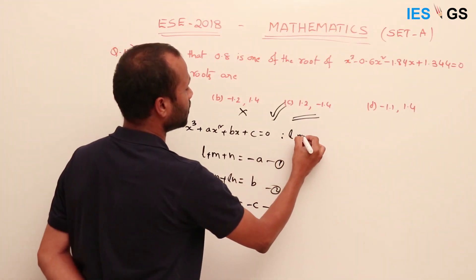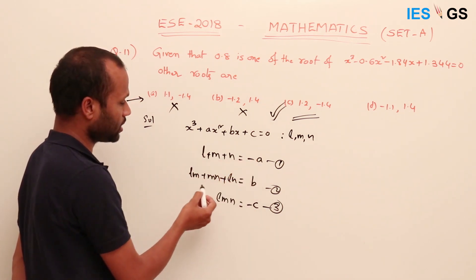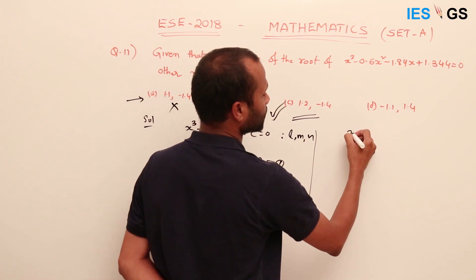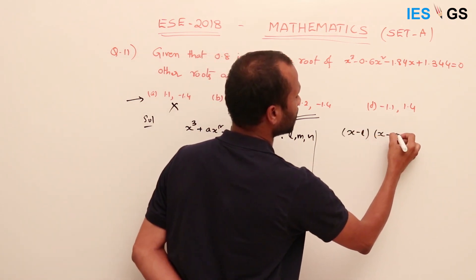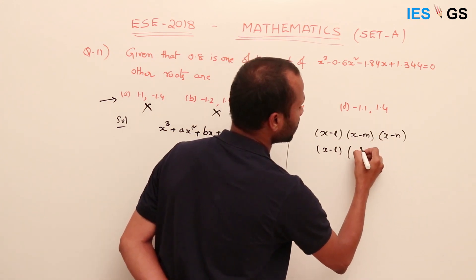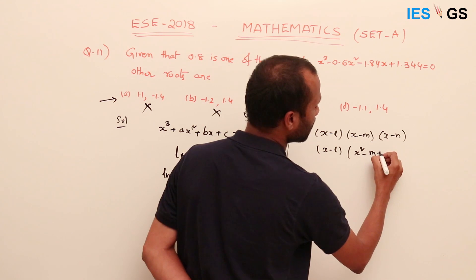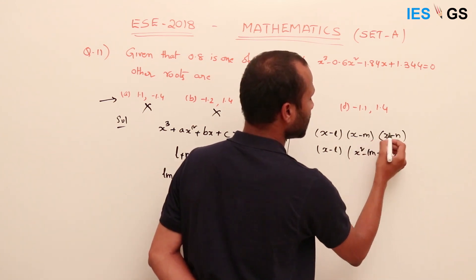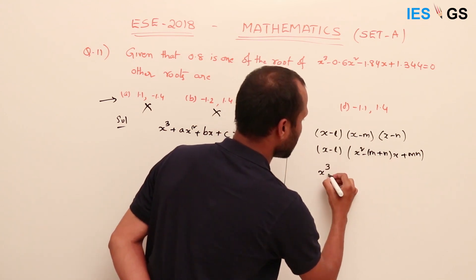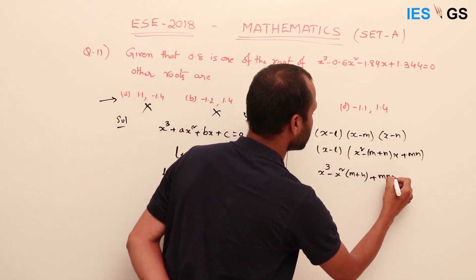Here we used the result that if l, m, n are roots of a third-order equation x³ plus ax² plus bx plus c equals 0, then l plus m plus n equals minus a, the sum of products equals b, and the product equals minus c. This comes from expanding x minus l times x minus m times x minus n, collecting the x² term as minus of m plus n, giving x² and then the x terms.